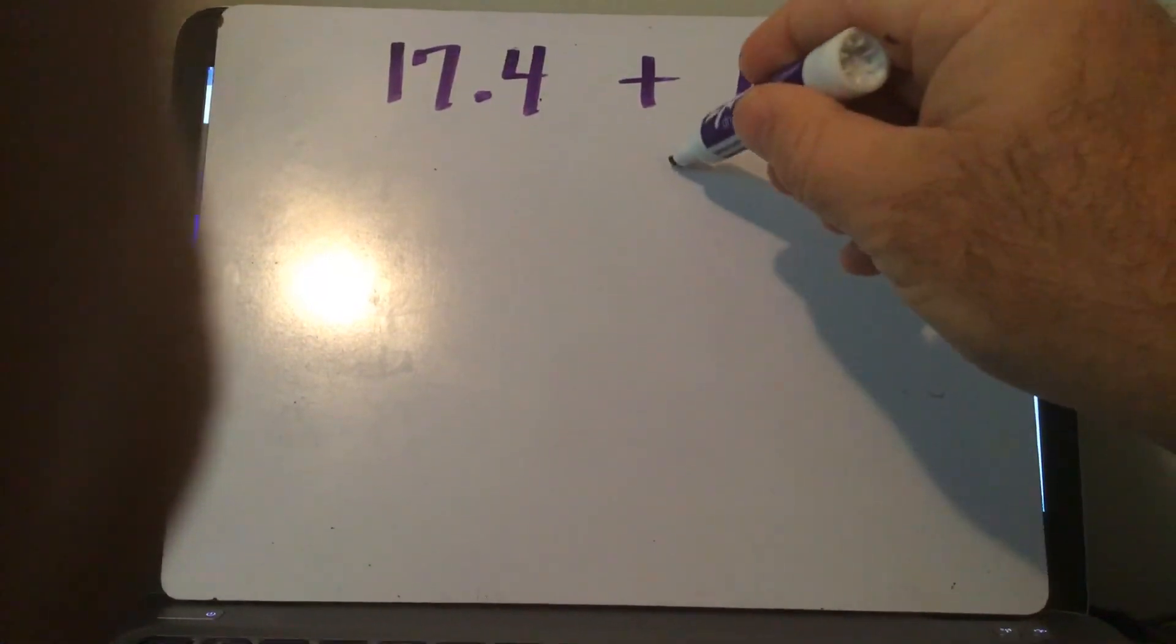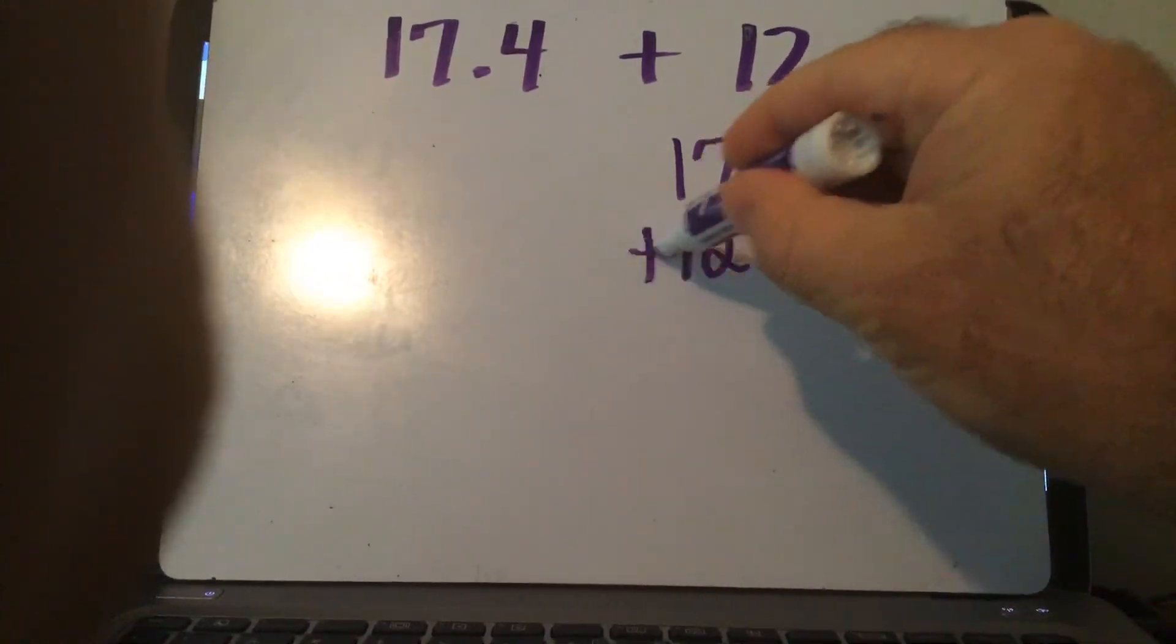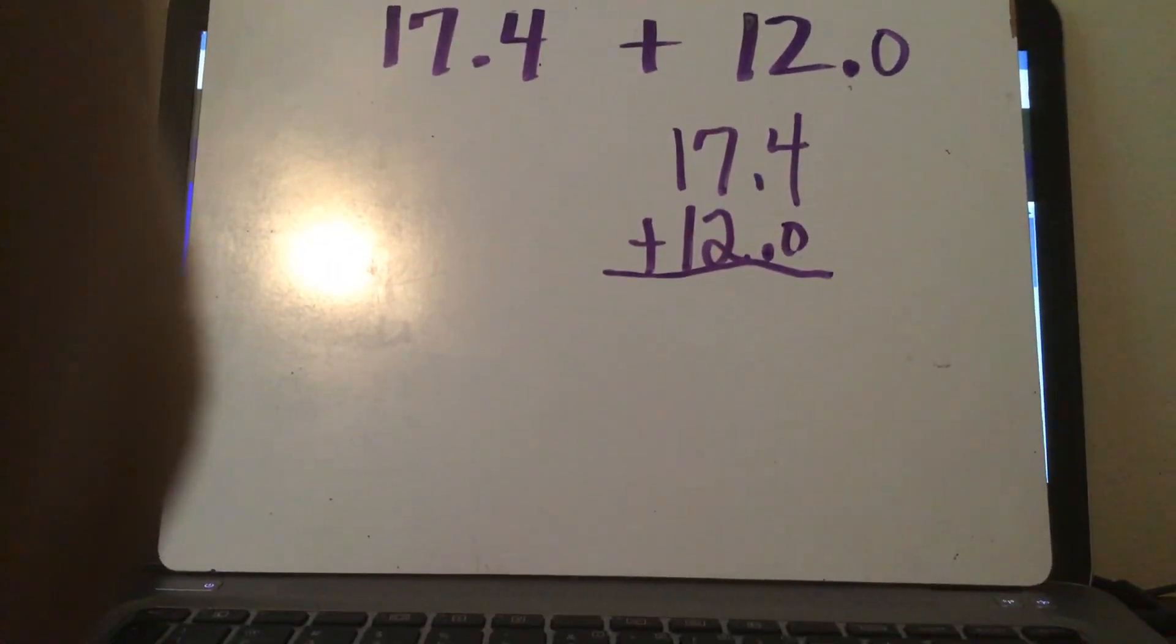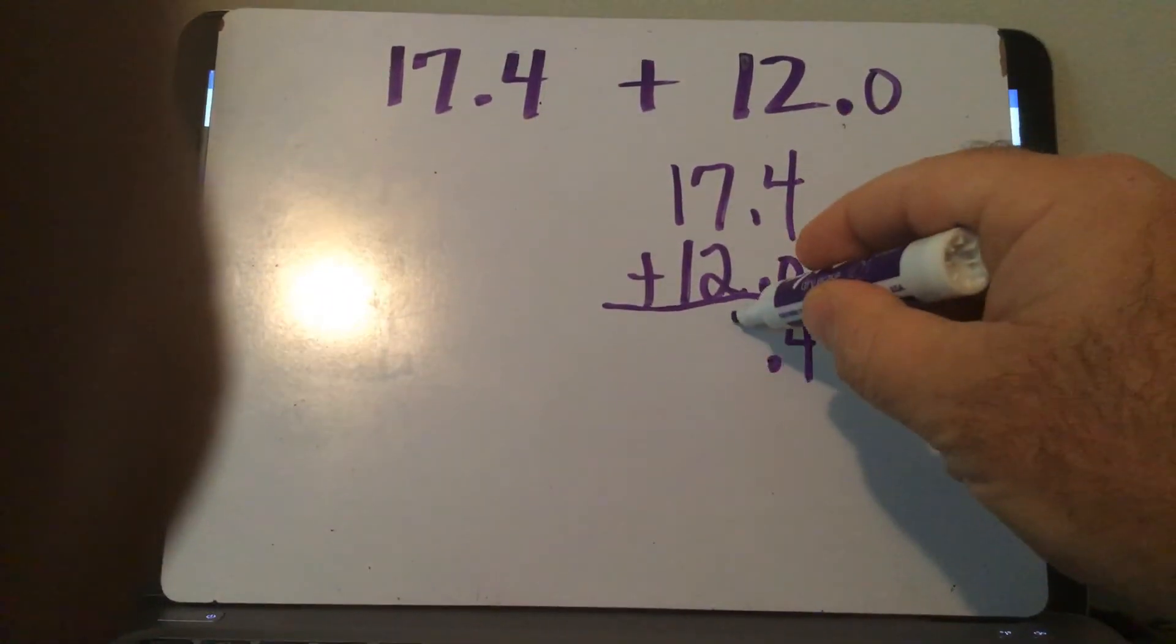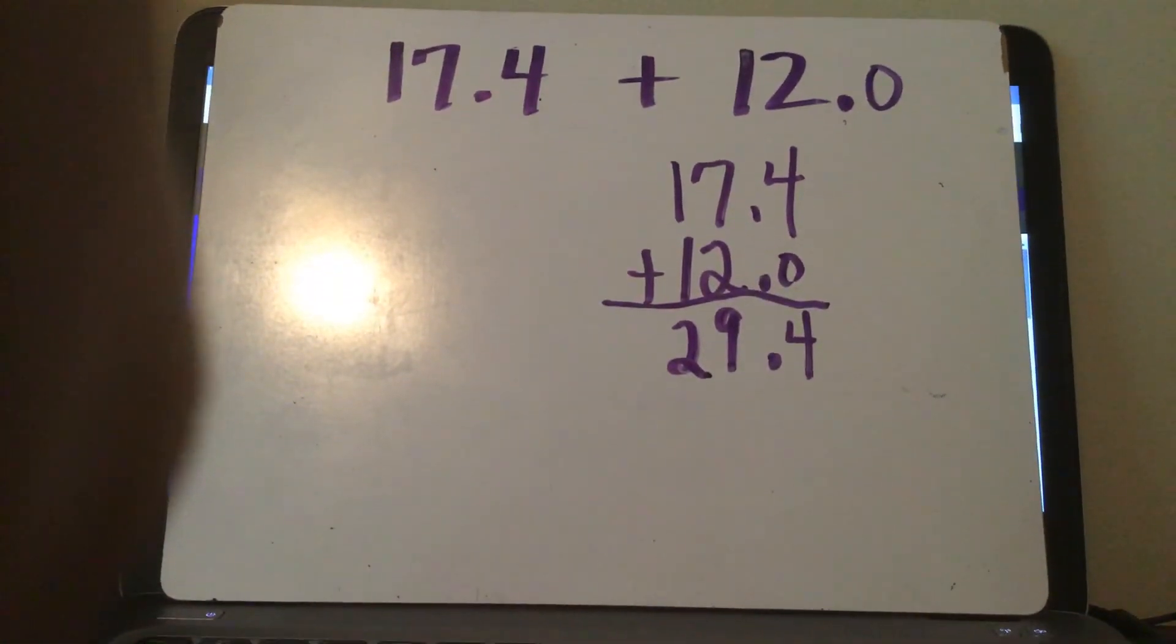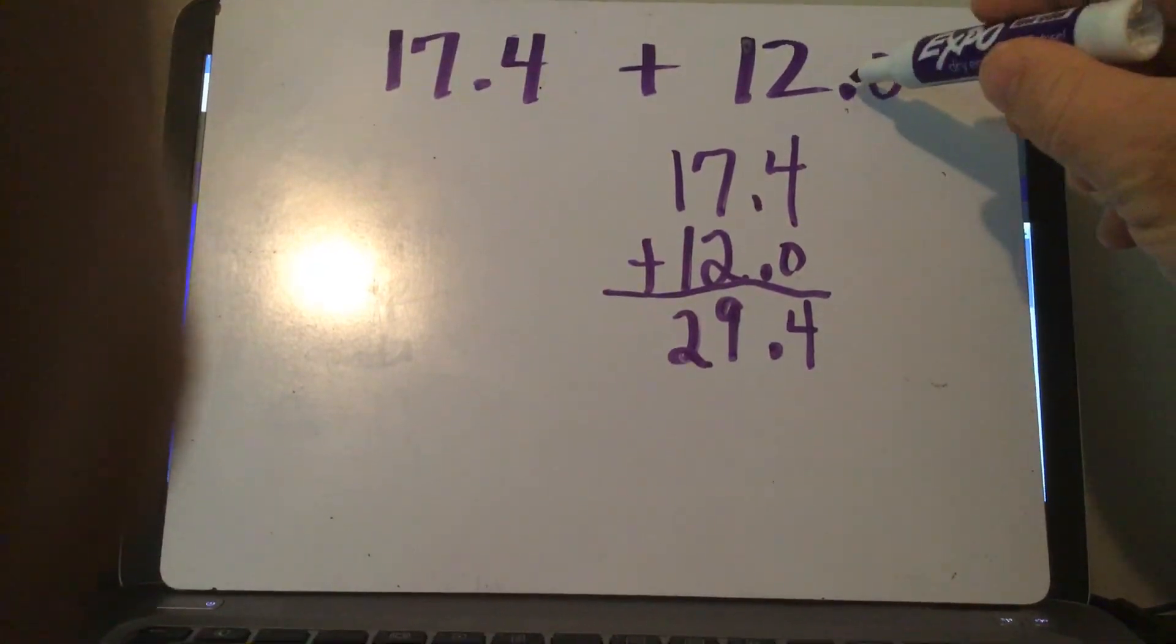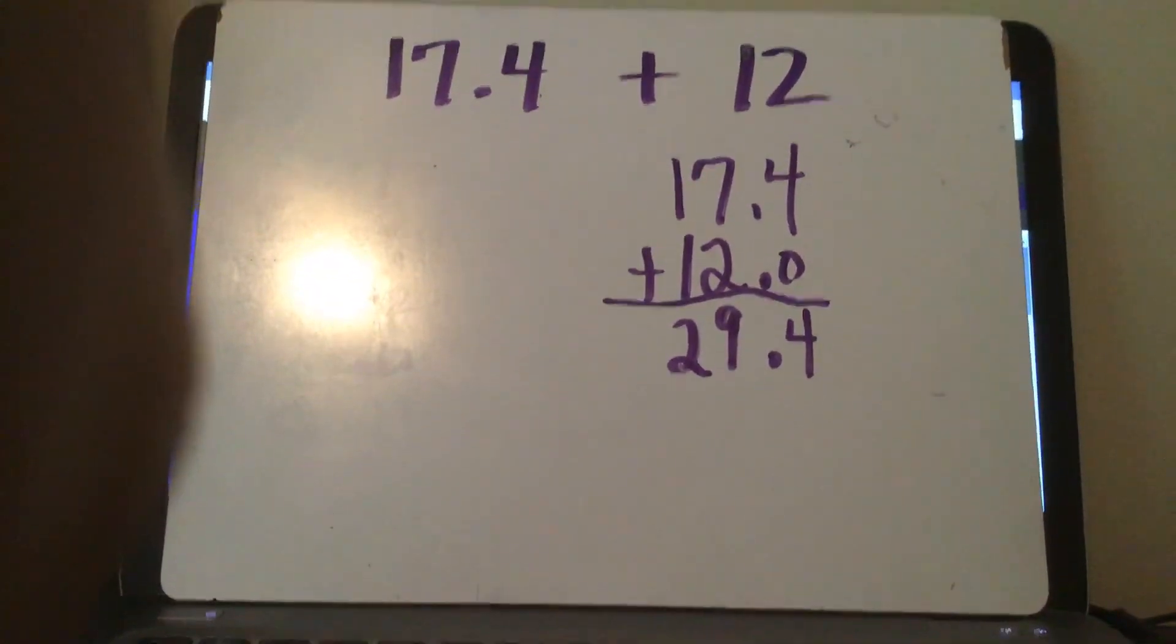So you can put 12 and 0 tenths. Now you go and you stack them and you got the decimal now. So you can go 17 and 4 tenths plus 12 and 0 tenths. And that's super easy: 4 plus 0 is 4, 7 plus 2 is 9, 1 plus 1 is 2, and you get 29 and 4 tenths.